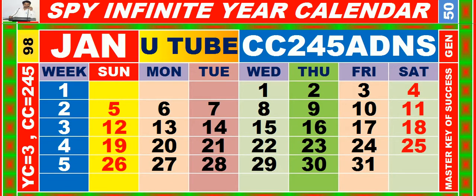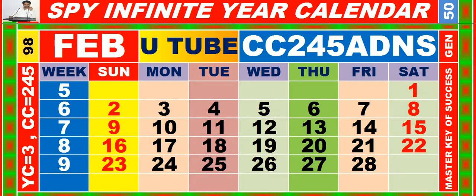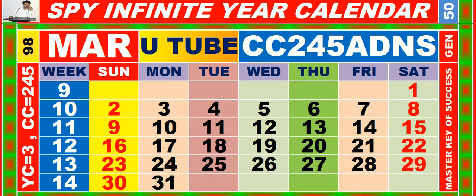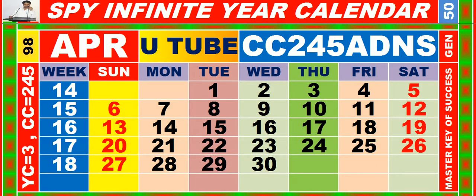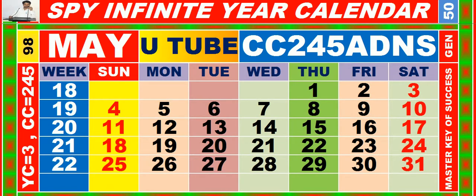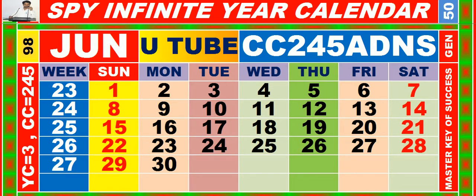Calendar for the month of January, having calendar code equal to 245. Calendar for the month of February, having calendar code equal to 245. Calendar for the month of March, having calendar code equal to 245. Calendar for the month of April, having calendar code equal to 245. Calendar for the month of May, having calendar code equal to 245. Calendar for the month of June, having calendar code equal to 245.